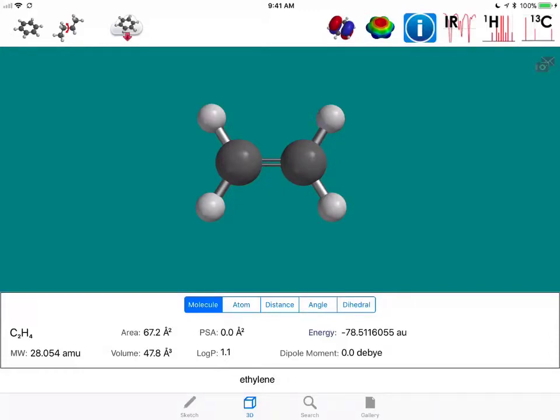In this organic chemistry screencast, we're now going to look at the functional group alkene, the specific molecule being ethylene.